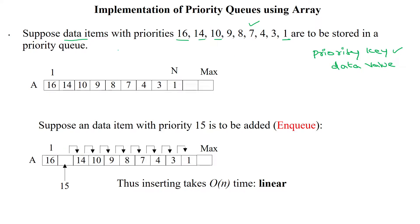So now 16 is having the highest priority, so we are going to insert it at the first location, then 14 with the second highest priority, 10 with the third highest priority. Likewise, 1 is having the lowest priority, so we have inserted it at the last position.